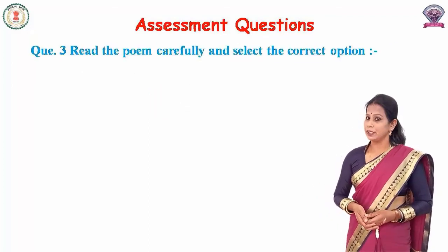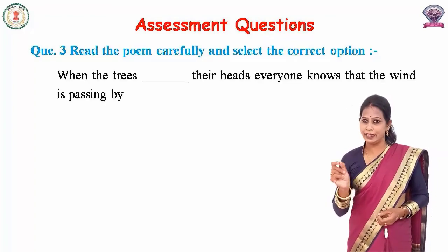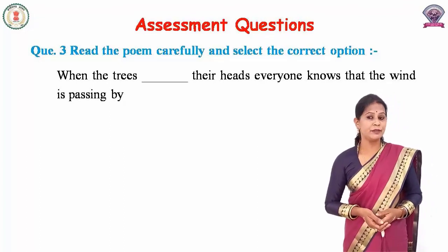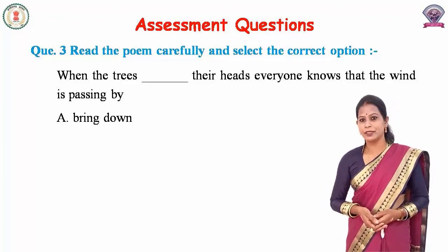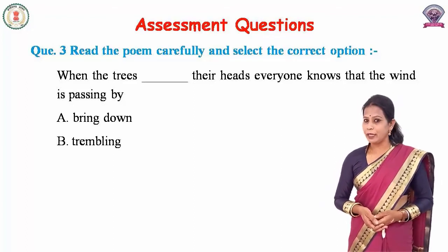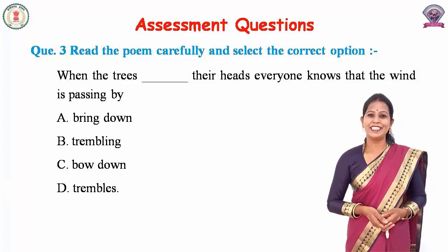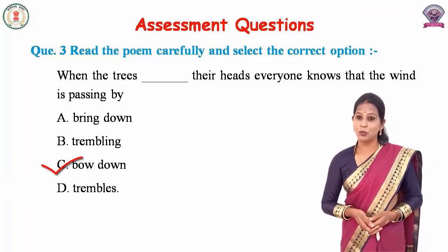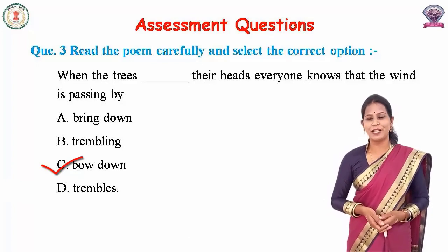Question number three: Read the poem carefully and select the correct option. 'When the trees ___ their heads, everyone knows that the wind is passing by.' The options are A. Bring down, B. Trembling, C. Bow down, D. Trambles. The correct answer is C — Bow down. When the trees bow down their heads, everyone knows that the wind is passing by.